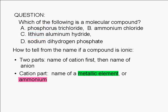Next we look for ammonium. Choice B is ammonium chloride. Therefore, choice B is an ionic compound. The cation in choice B is ammonium, NH4 with a positive 1 charge.